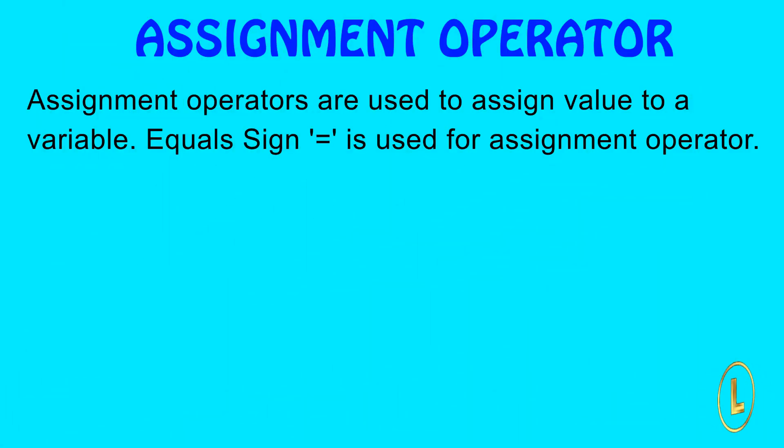Assignment operators are used to assign value to a variable. Equals sign is used for assignment operator. The left side operand of the assignment operator is a variable and right side operand is a value. The value on the right side must be of the same data type of variable on the left side, otherwise the compiler will raise an error.